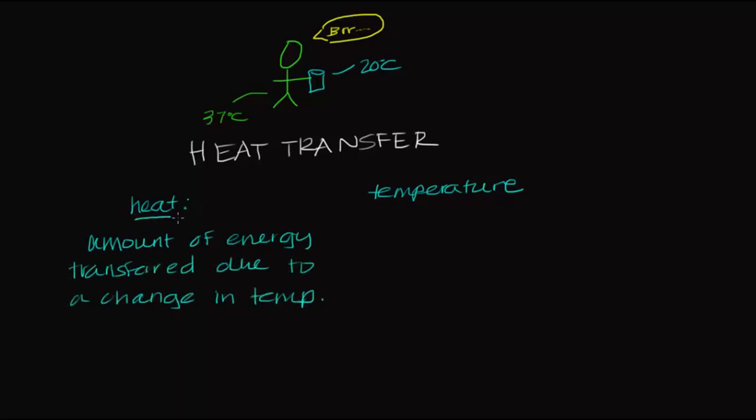Remember that whenever you see a gradient, whether it's a gradient of pressure or concentration, or in this case, a gradient of temperature, it always means that there is some type of potential energy that's stored up. Since the system wants to achieve its lowest energy possible, if there's no opposing force, the gradient wants to disappear. This is the basis behind heat transfer.